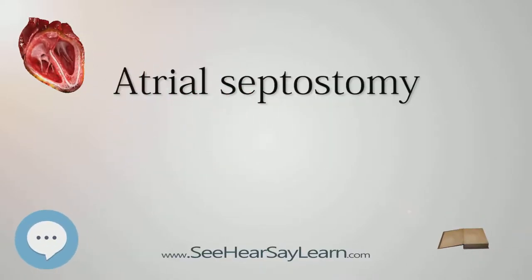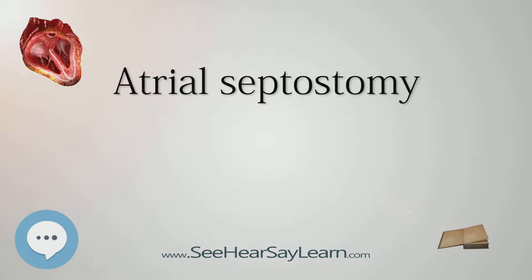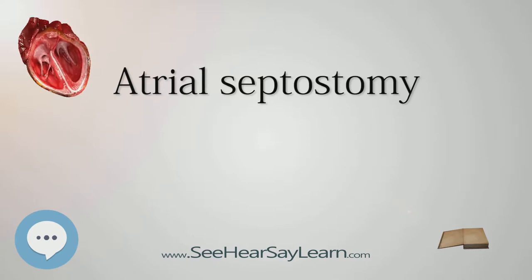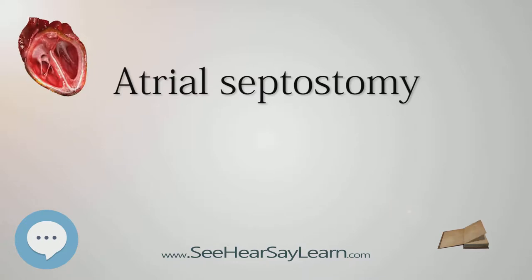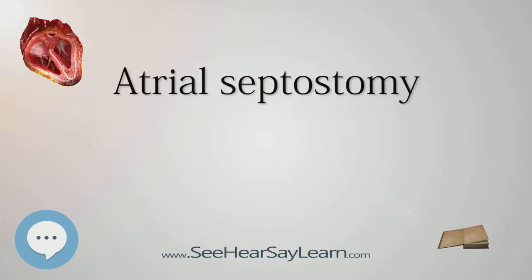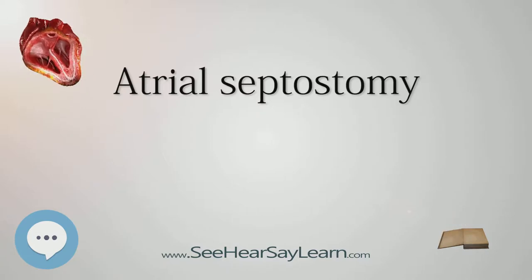Atrial septostomy is a surgical procedure in which a small hole is created between the upper two chambers of the heart — the atria. This procedure is primarily used to treat dextrotransposition of the great arteries, or DTGA, often imprecisely called transposition of the great arteries, a life-threatening cyanotic congenital heart defect seen in infants.